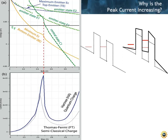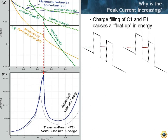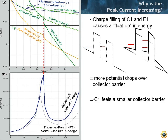There is very little charge in the barrier, which means the lever arm goes really up to the end of the well. Since this is floating up, there is more potential now dropping over that collector barrier. So as it floats up, you pull down the gate at the collector and make it more and more asymmetric — that makes the resonance broader, which makes more current flow. That's why the peak current is larger. It floats up in energy; along the lever arm, more potential drops over the collector barrier; C1 feels a smaller collector barrier and the resonance becomes broader.